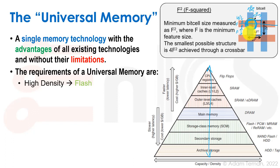If we 3D stack cells on top of each other, we can get something that's 4F-squared divided by the number of stacks. And with multi-level cells storing multiple bits, we can get even higher density. The physical spatial resolution minimum is 4F-squared. NAND flash, for instance, is what we would take as our representative of such a high-density memory.